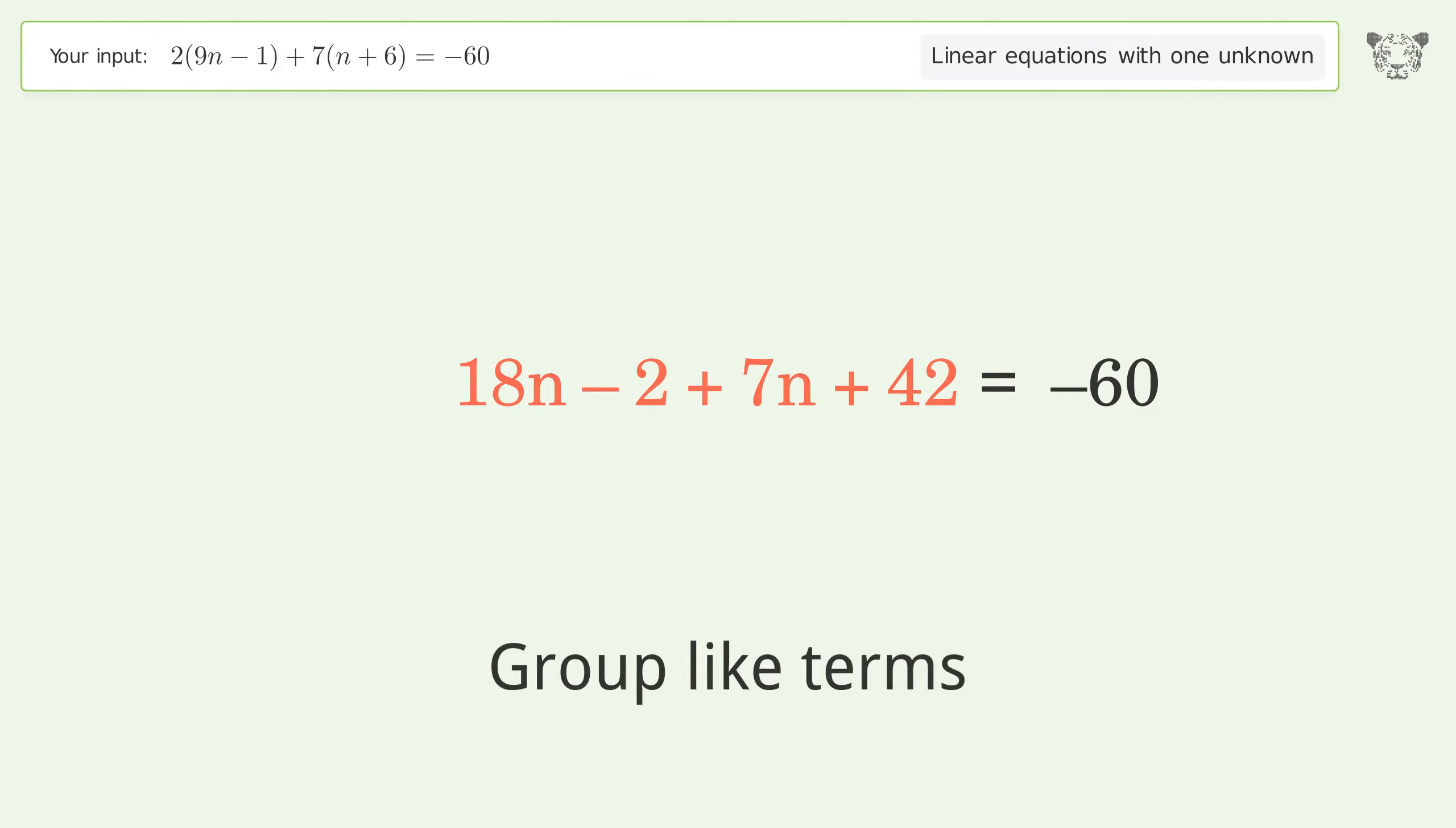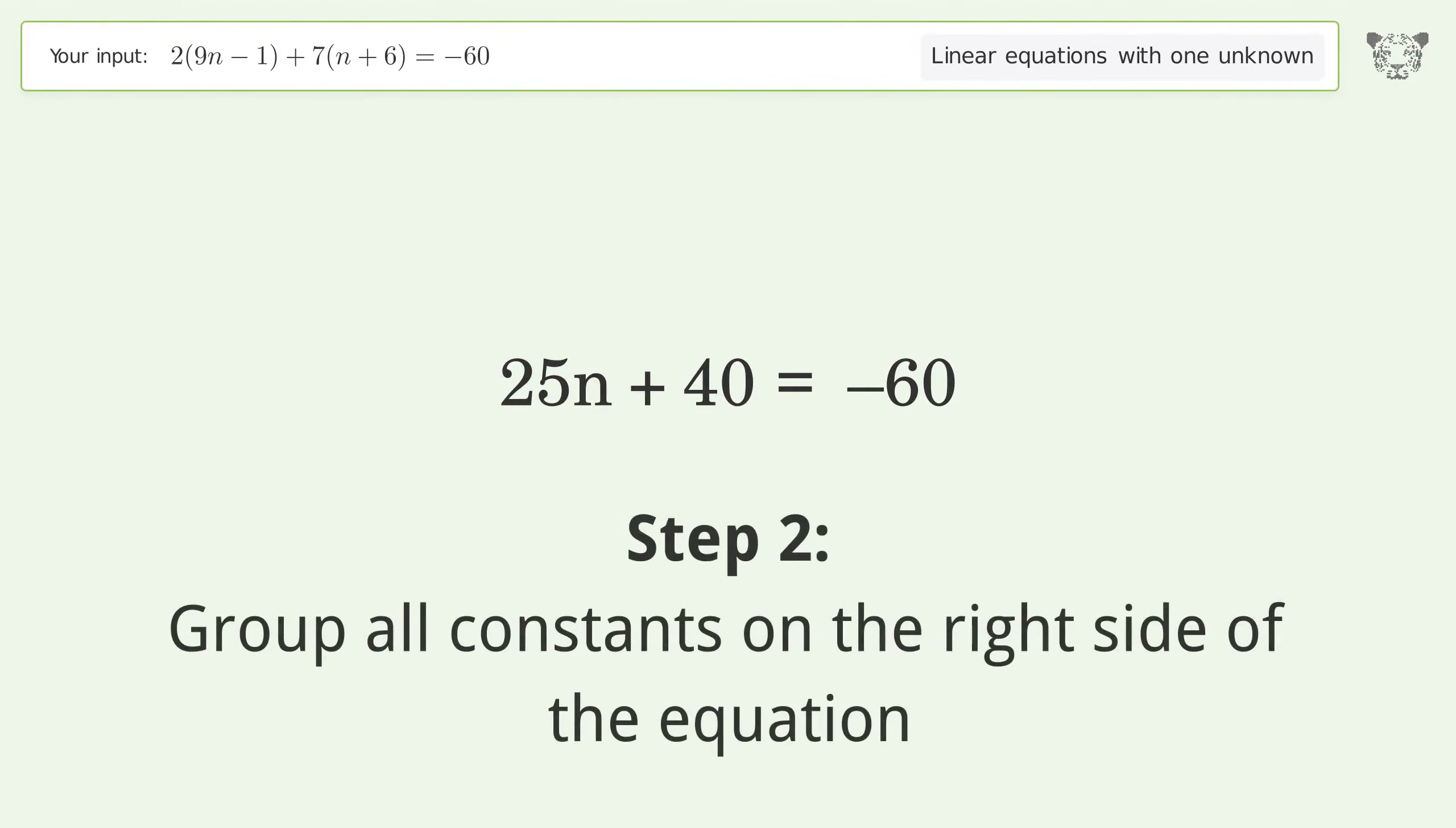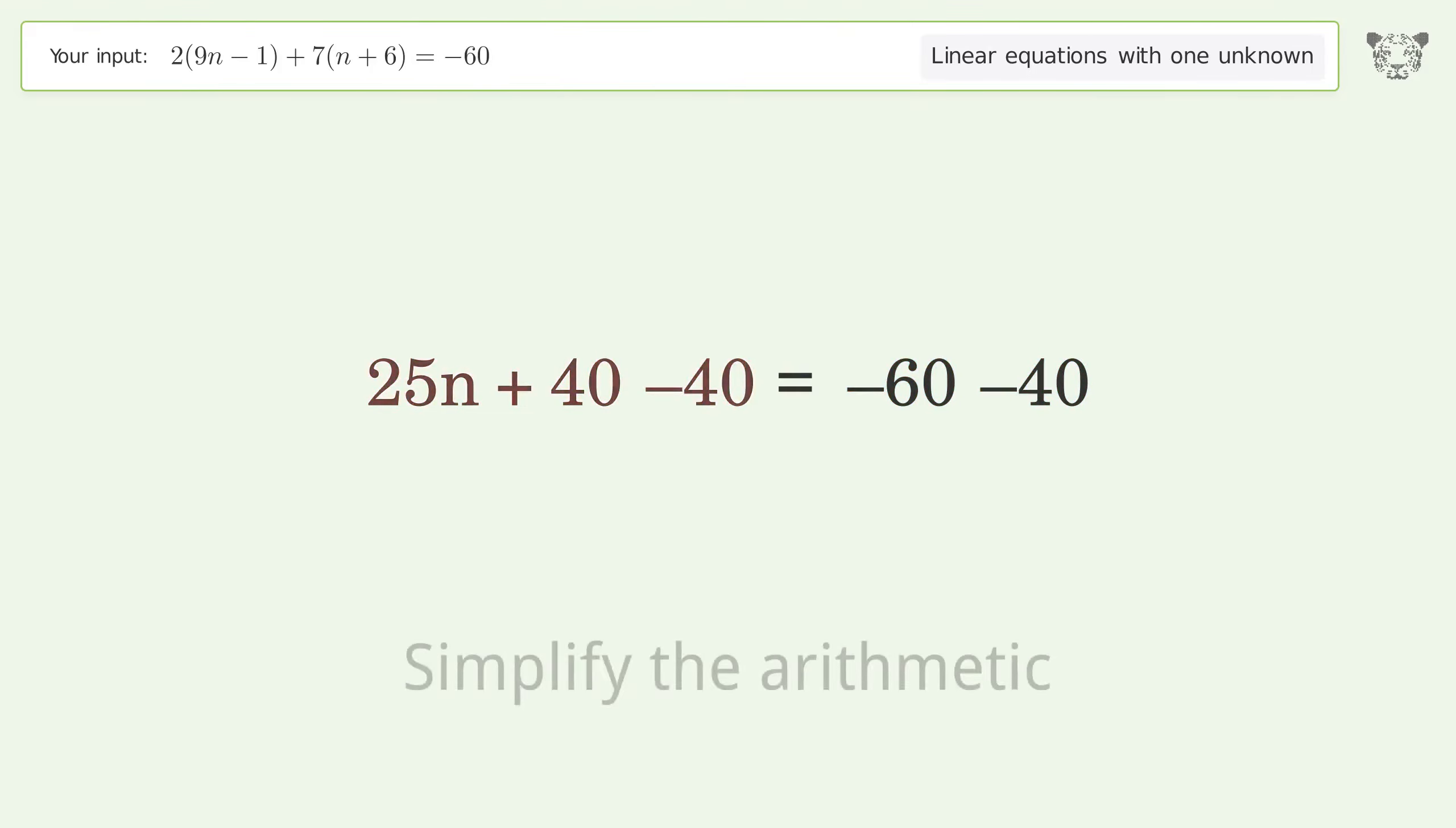Group like terms. Combine like terms. Group all constants on the right side of the equation. Subtract 40 from both sides. Simplify the arithmetic.